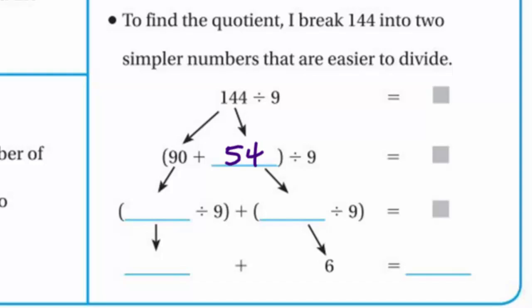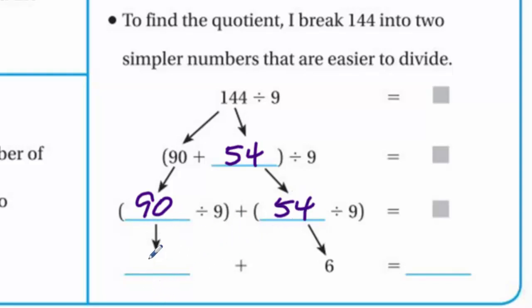Now I see why they're doing this — it's because 90 and 54 are both multiples of 9! So we bring down 90 and bring down 54. 90 divided by 9 is easy — that's just 10. And 54 divided by 9 is 6, which is one of our basic times table facts. So 10 plus 6 equals 16. That was a really easy way to solve it using simpler numbers!